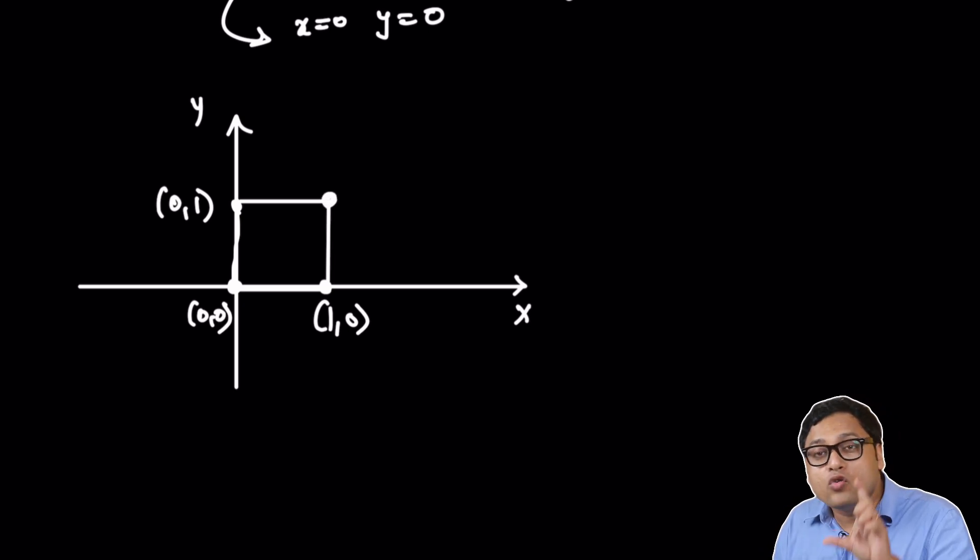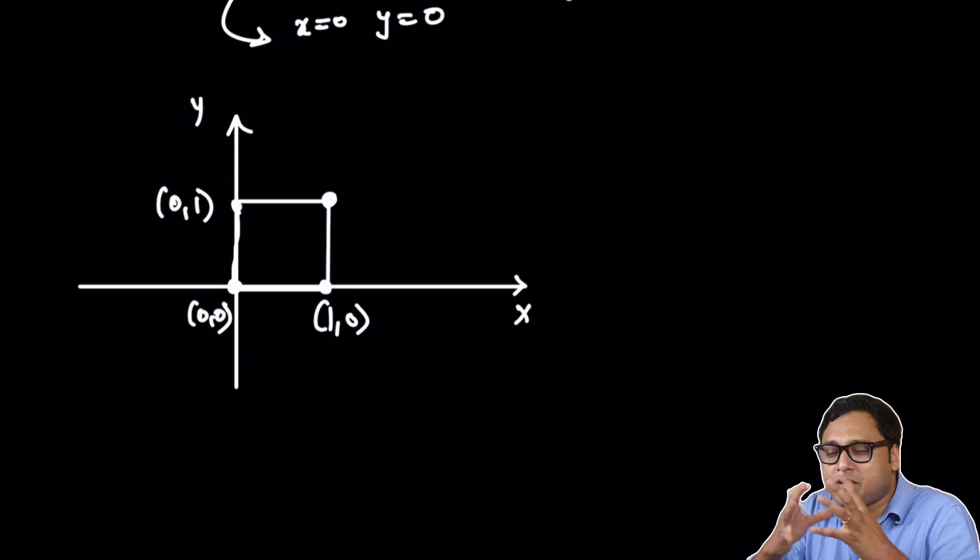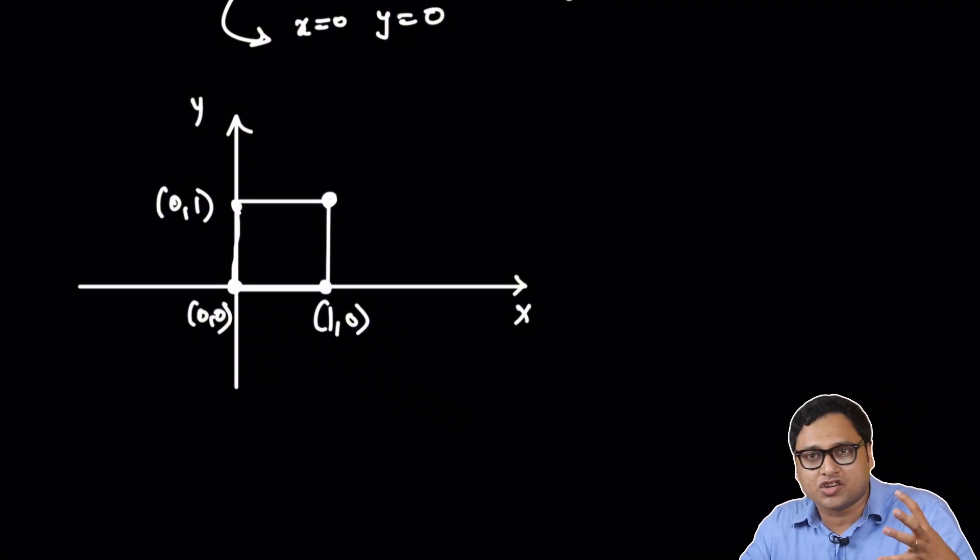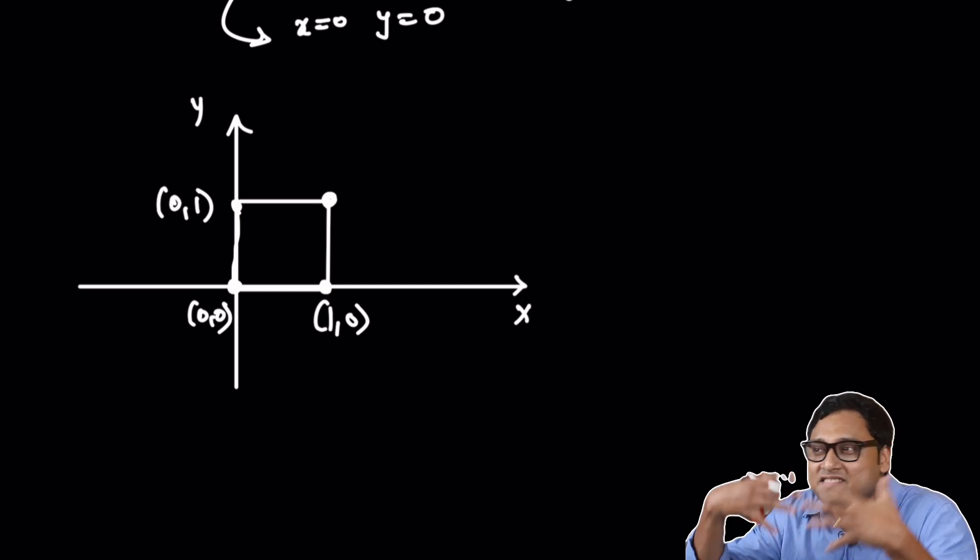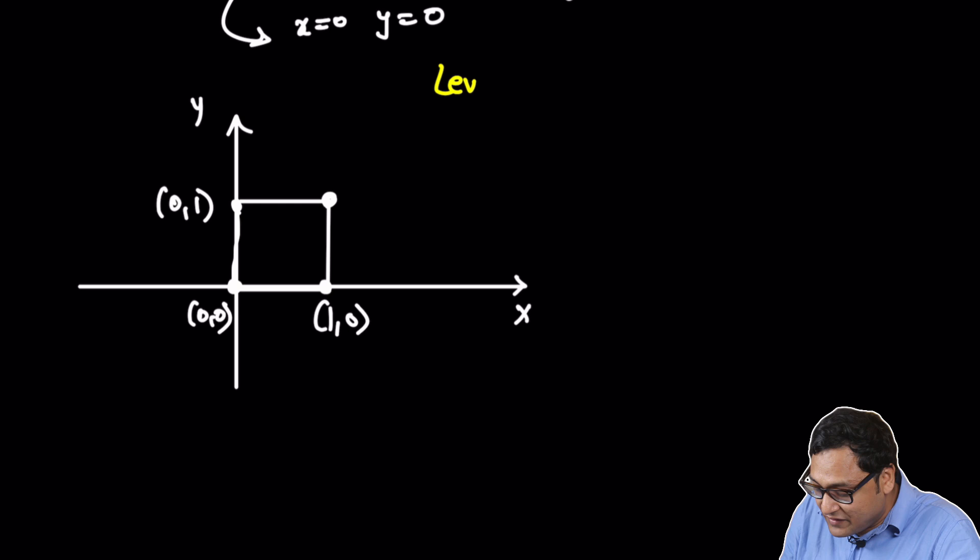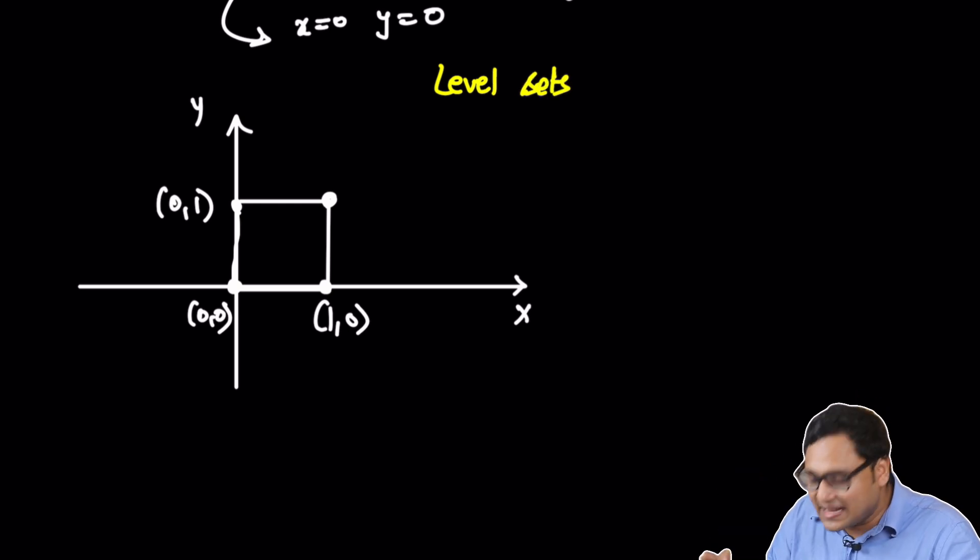This is the domain x-axis y-axis. This is 0 comma 0, this is 1 comma 0, and this is 0 comma 1. And we have a square like this. And the question is, how does this square map into the output space? So sometimes what we can do, since the input is two-dimensional and the output is two-dimensional, it's a four-dimensional space. If you really wanted to draw the picture of the function, you cannot do that. You don't have a four-dimensional space to draw. Human intuition kind of fails there.